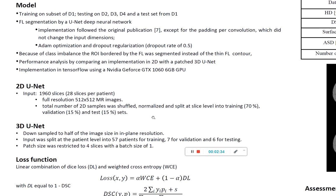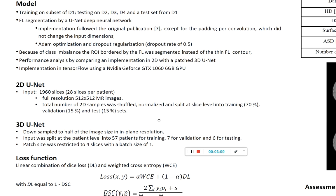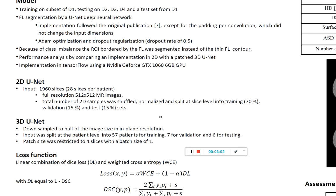First, the U-Net was trained on single slices. The dataset consisted of 1960 slices from 70 patients. The 2D U-Net received the full resolution of 512 x 512 pixels per image. The dataset was shuffled, normalized, and split into training 70%, validation 15%, and testing 15%.